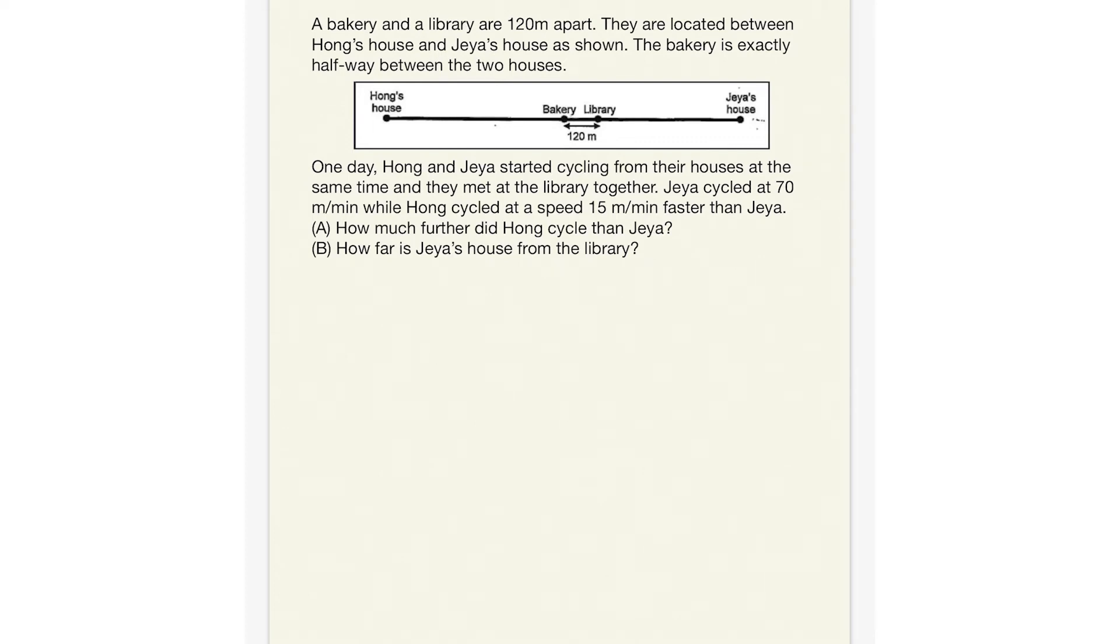Okay, so for this question, we need to refer to some of the key information over here. We notice that Hong's house and Jaya's house are at the end of this route here, and the bakery is right in the middle. The library is 120 meters from the bakery. So from here, we also notice that in this case, from Hong's house to the library, the distance is a little bit further as compared to Jaya reaching the library.